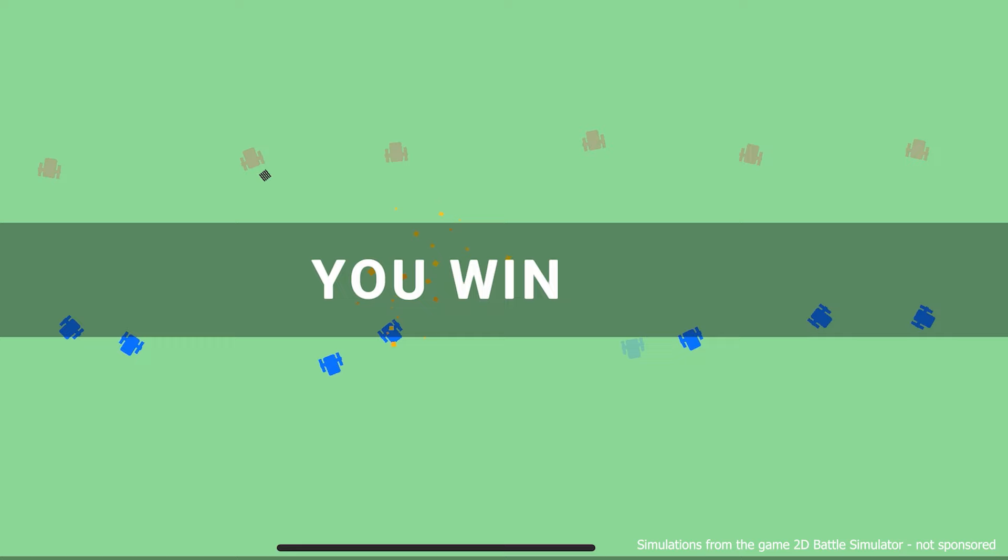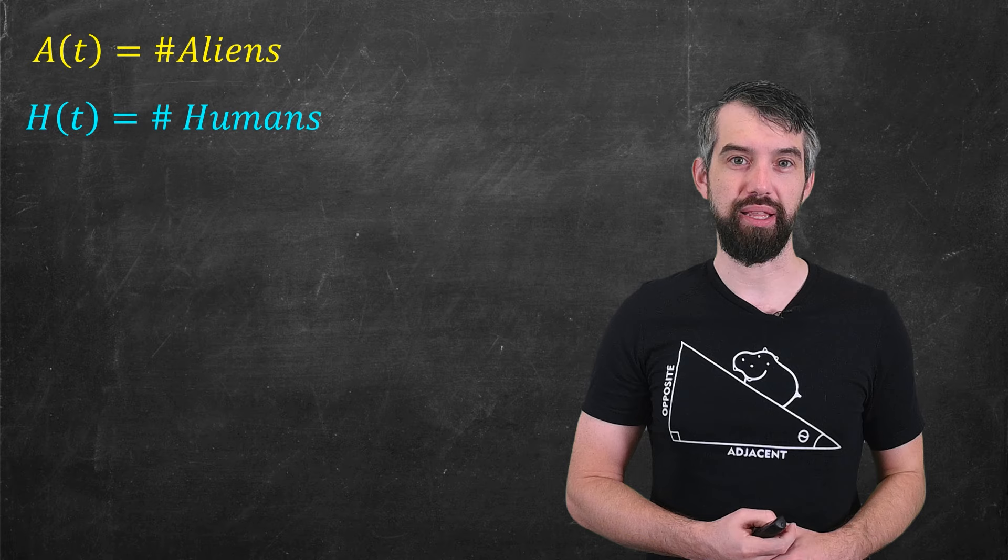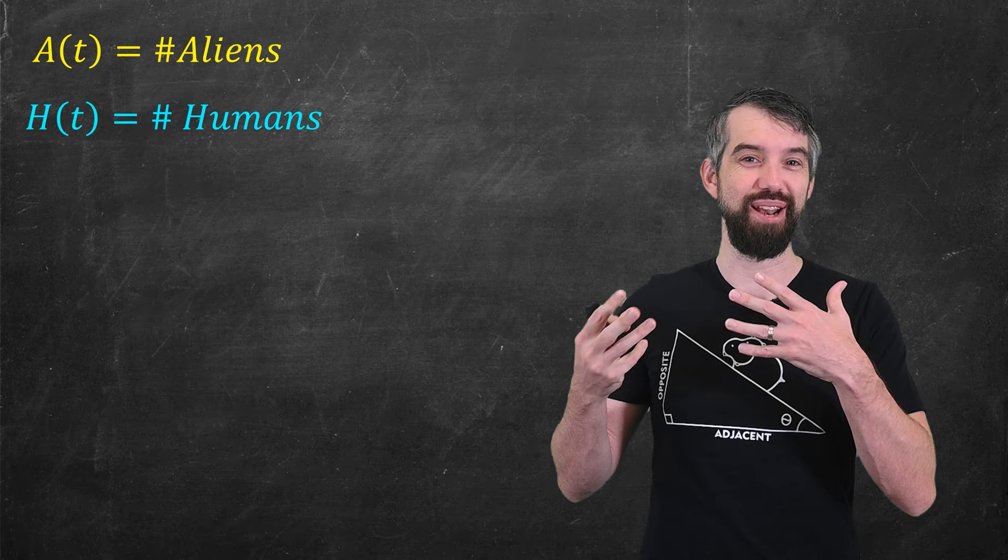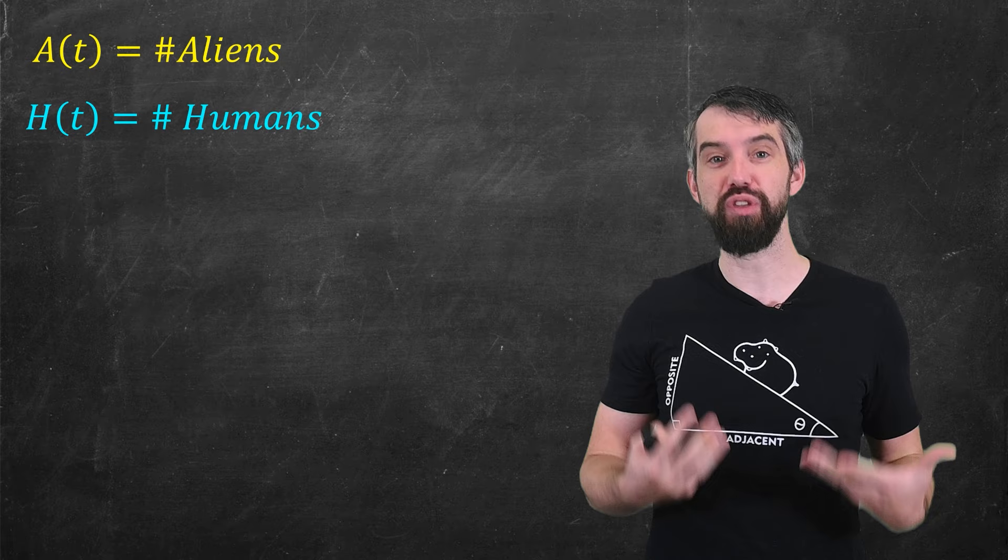So how can we model this mathematically? I'm going to imagine I have two different populations. I'm going to call them aliens and humans just to keep it lighthearted. And these are functions of time. The number of aliens and the number of humans is decreasing over the battle as a function of time.